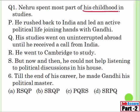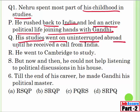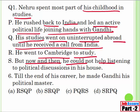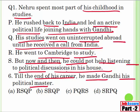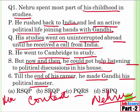Let me do another one. 'Nehru spent most of his childhood in studies. He rushed back to India and led an active political life joining hands with Gandhi. His studies went on uninterrupted abroad until he received a call from India. He went to Cambridge to study, but now and then he could not help listening to political discussions in his house. Till the end of his career, he made Gandhi his political master.' What is the context here? We are talking about Pandit Nehru. What is the main point the author is trying to tell us? How Pandit Nehru came into politics. All the things in between are the details. This is also a previous year question.